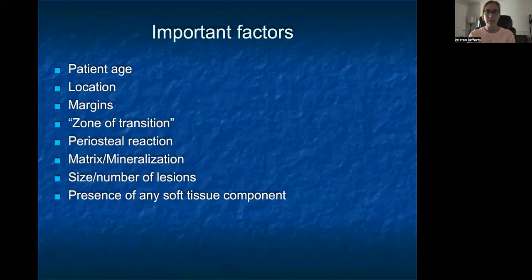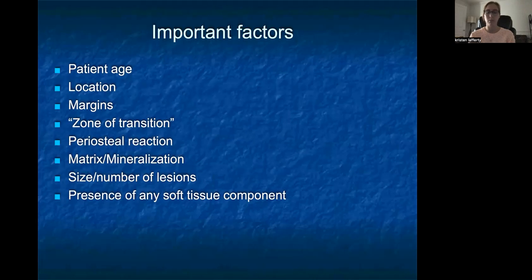Important factors when it comes to differentiating bone lesions include patient age, location of the lesion, margins of the lesion including something called zone of transition which we will go over, the appearance of periosteal reaction, the matrix or mineralization of the actual lesion itself, size and number of lesions, and then the presence of any soft tissue components.